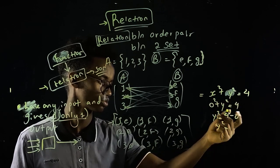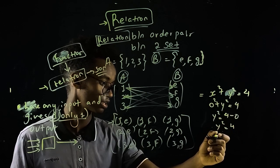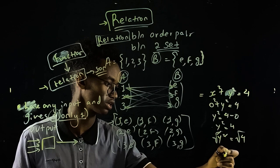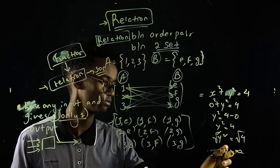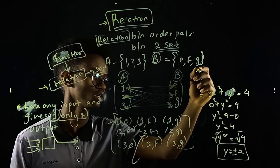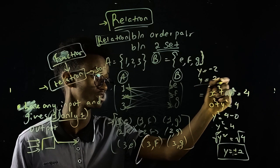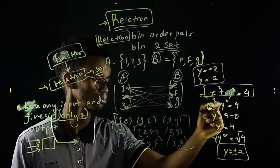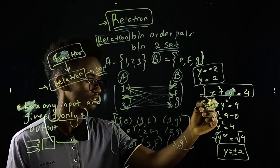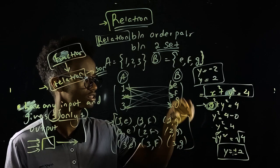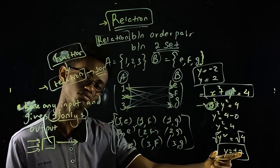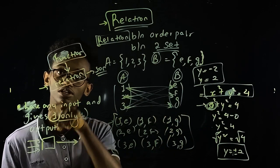Solving y² = 4 gives y = ±2. So for input x = 0, we get two outputs: y = positive 2 and y = negative 2. That means we have two outputs for one input, which is a problem.